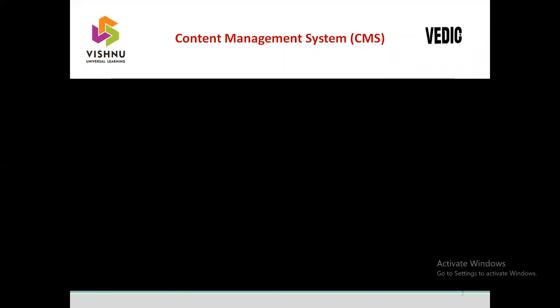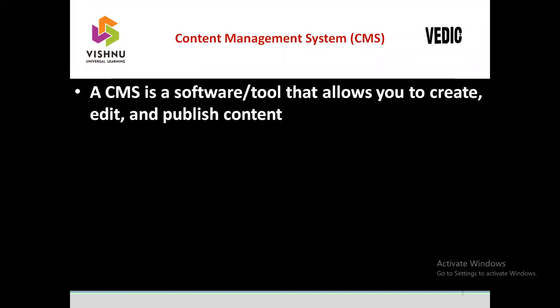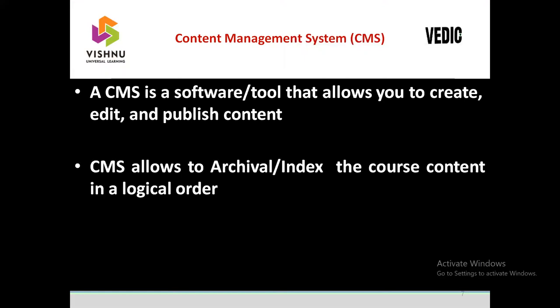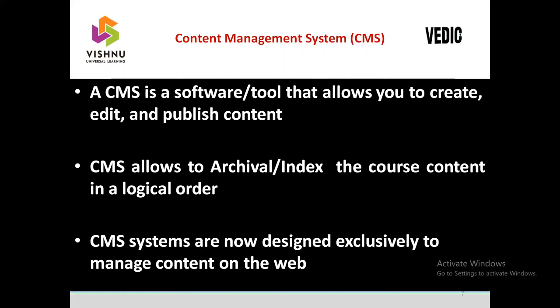Let us see what is the meaning of a content management system. A content management system is a software or tool that allows anyone to create, edit, and publish their content online. It allows you to archive or index course content in a logical order and is designed to manage content on the web. Google Classroom, Moodle, ATutor, and Open edX are examples of content management systems — there are plenty available.